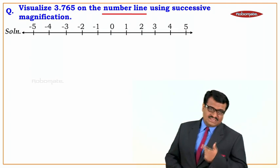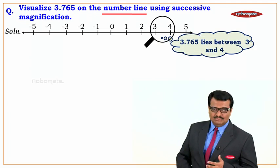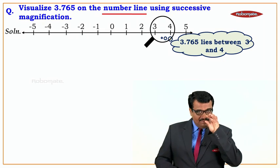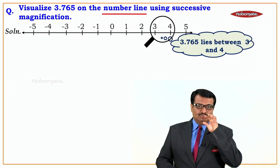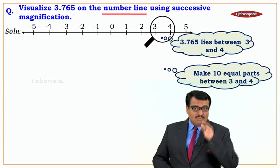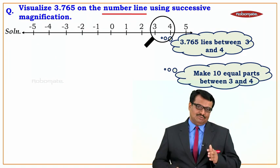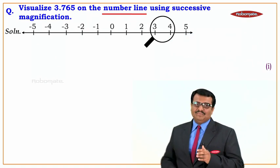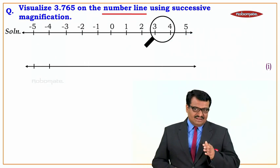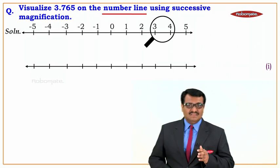3.765 lies between 3 and 4 on this number line. So what we are going to do is magnify the part between 3 and 4. We are going to draw one more number line and make 10 equal parts between 3 and 4.